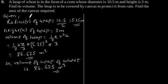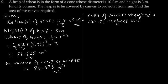Now we need to find the area of canvas required. Area of canvas equals the curved surface area of the cone, which is πrl. The value of l can be found as square root of r² + h².